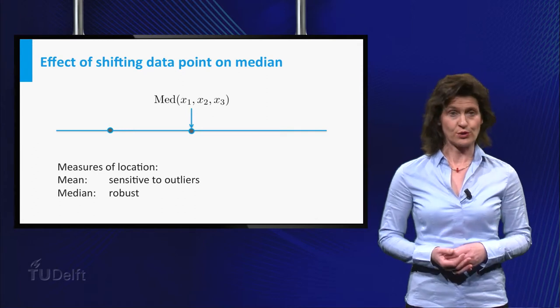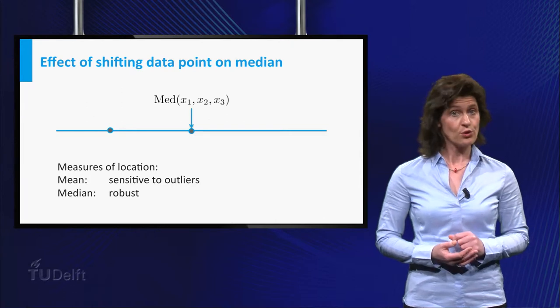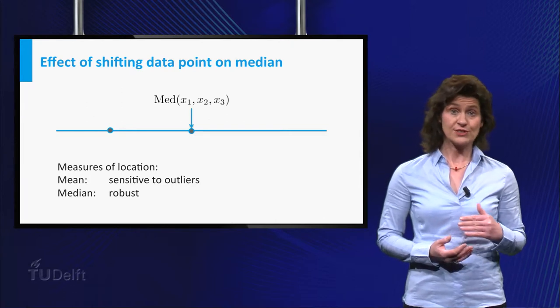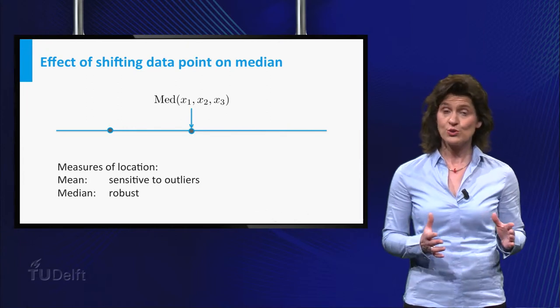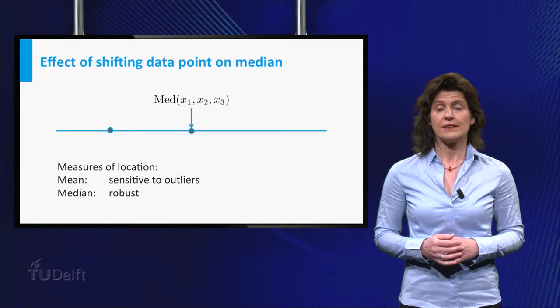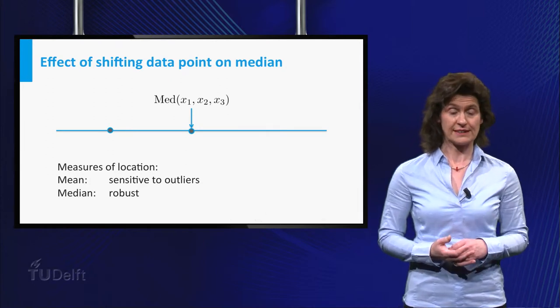You can think of more measures of center or location. A property all these measures should have, though, is that if you add a constant C to all individual data points, its location summary should do the same. Giving it a little thought, you will see that the mean and median of a dataset have this property.